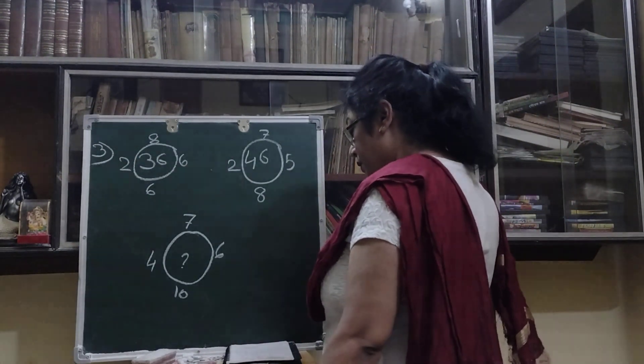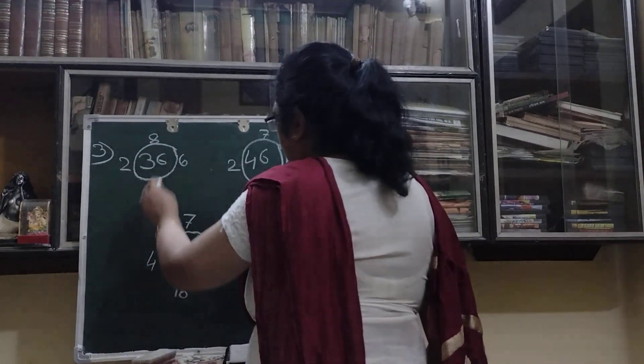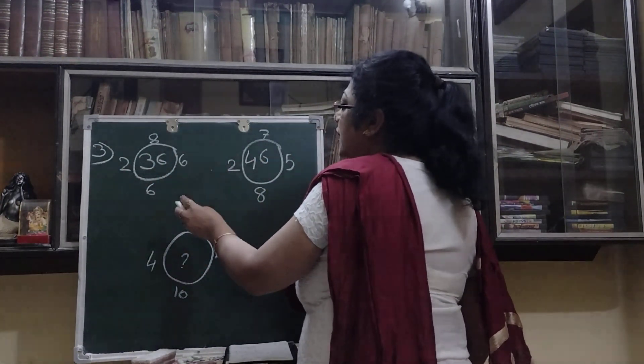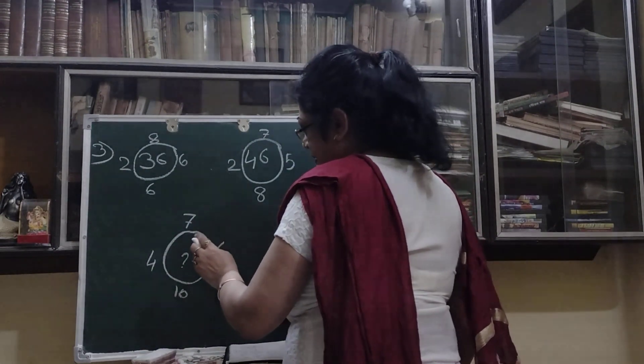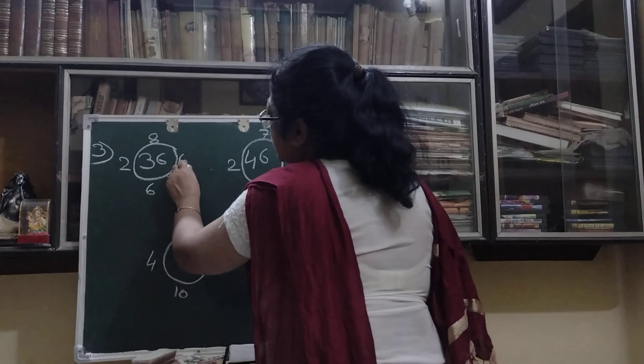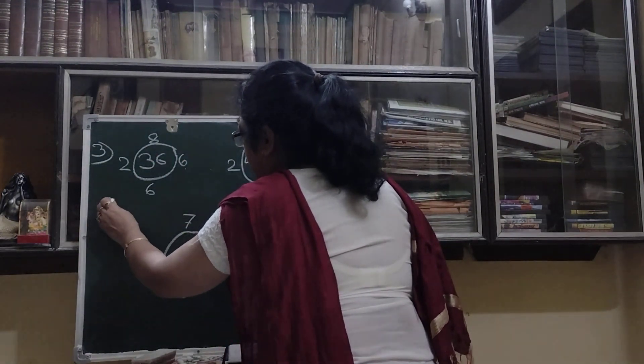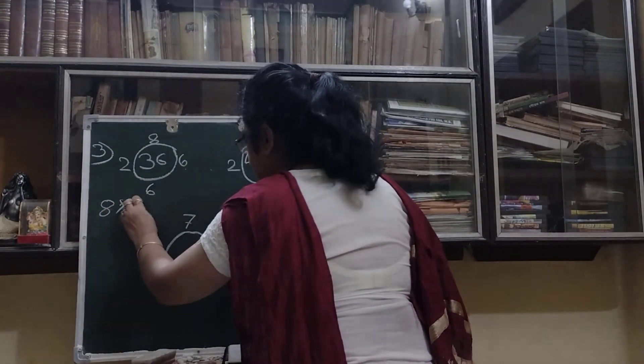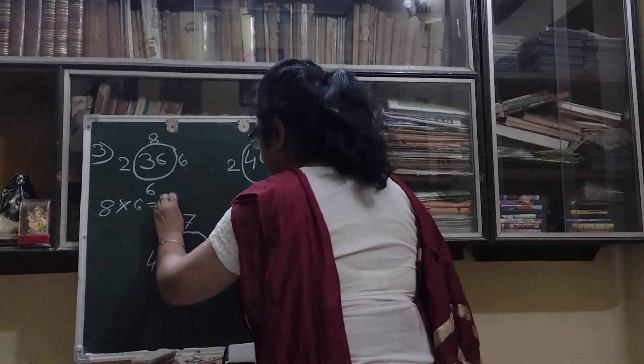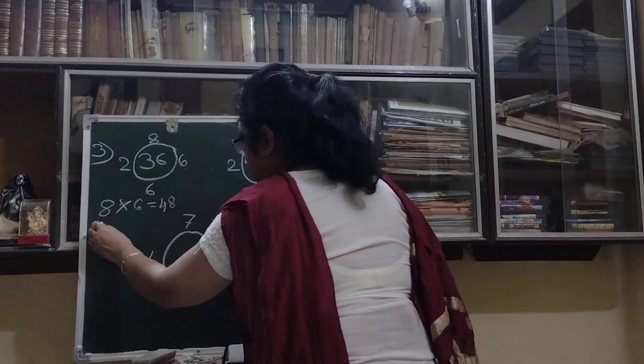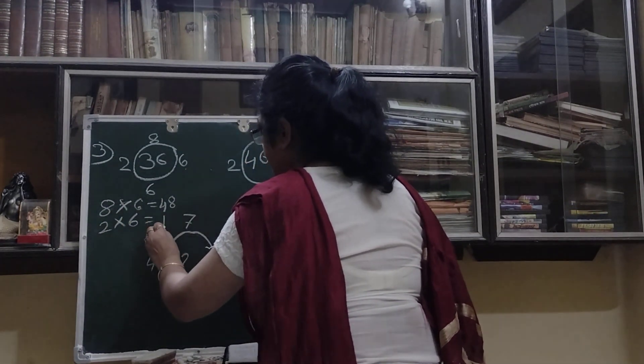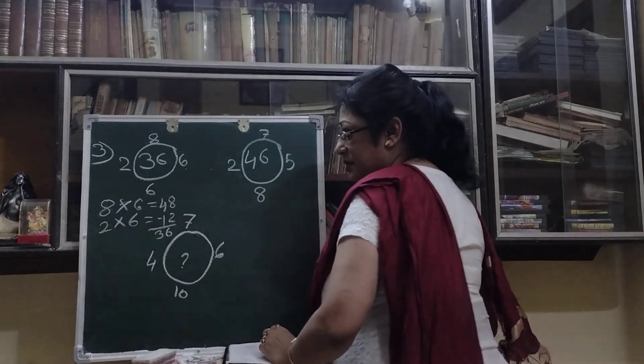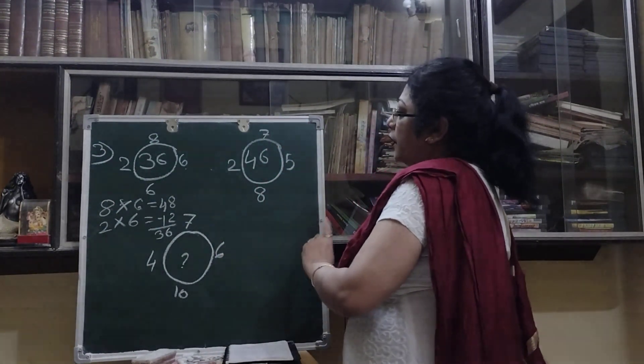What we will do? Let us multiply these two numbers and these two numbers. First you see 6 times 6 is 36. So 6 into, I am doing 2 into. Now first let us do this: 8 into 6 and 2 into 6 minus 36.